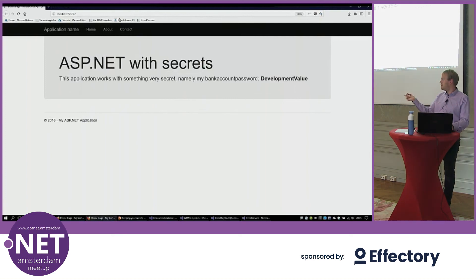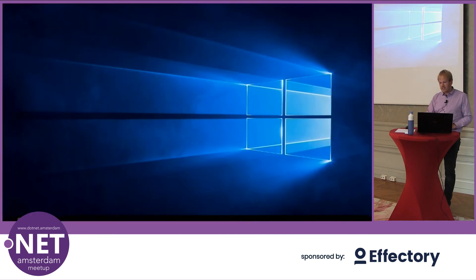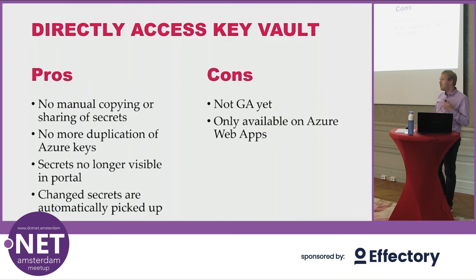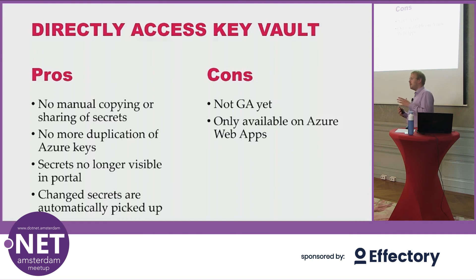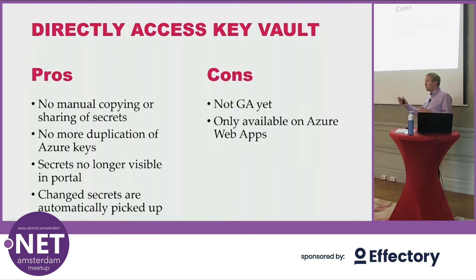So here in Azure we're seeing a value directly retrieved from Key Vault, and locally we see the development value. No more moving secrets around. Secrets are no longer visible in the portal because they are not in the web app — they're just in the memory of the web app. The cons: it's not yet generally available, and it's currently only available on Azure Web Apps, not Service Fabric or worker/web roles. As far as I know, there's also not a competing offer in AWS or Google Cloud.